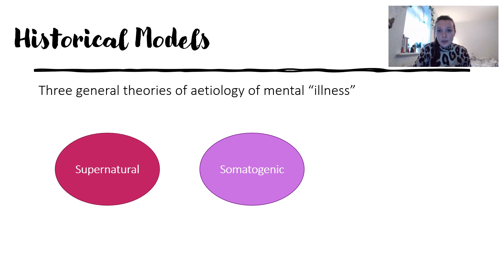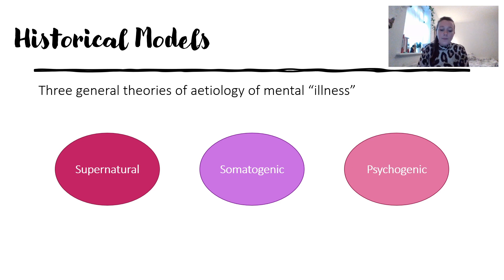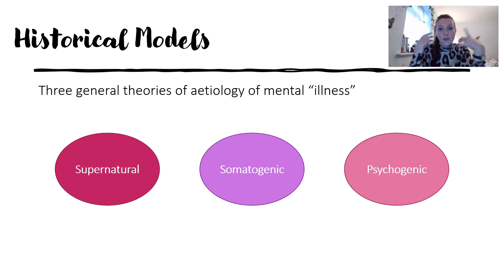The third theory is psychogenic. Galen, around 170 AD, suggested that psychological stress could cause abnormality. Although these theories were actually ignored for centuries, the idea that something psychological — in our minds — manages how we think, speak, behave, and feel, and causes mental illness, was introduced then but not widely heard for centuries.